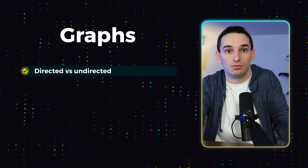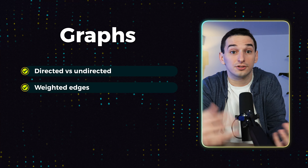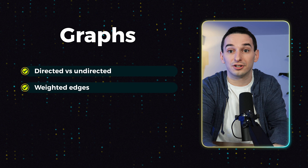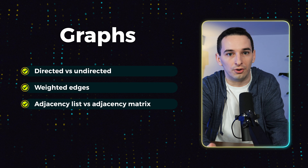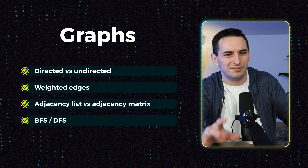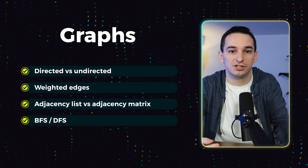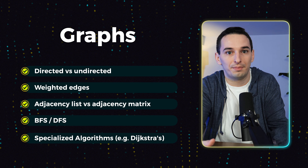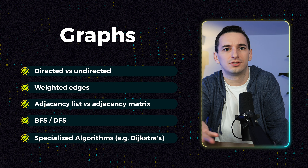For graphs, there's a bunch of different types — some graphs have bi-directional edges, some don't; some have weighted edges, some don't. There are also two different main ways to implement a graph using either an adjacency list or an adjacency matrix, and you should learn how to do both. As far as algorithms are concerned, breadth-first search and depth-first search apply here as well, just in slightly different ways. You should also probably learn some specialized algorithms such as Dijkstra's algorithm for finding the shortest path between two nodes, or topological sort for essentially sorting the nodes.